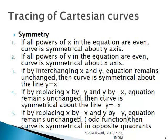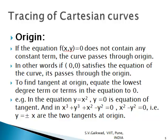If replacing x by −x and y by −y leaves the equation unchanged, the curve is symmetrical about the origin in opposite quadrants. To find if the curve passes through the origin: the equation f(x, y) = 0 should contain no constant term, or equivalently, (0, 0) satisfies the equation. To find the tangent at the origin, equate the lowest degree term or terms in the equation to zero.